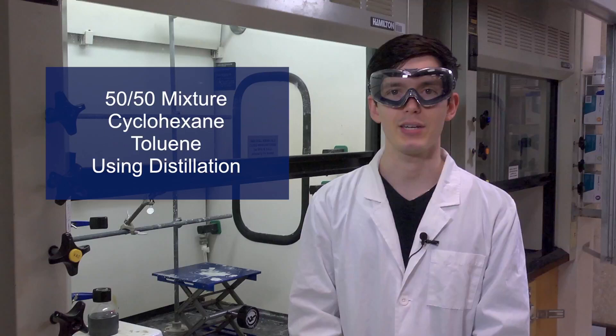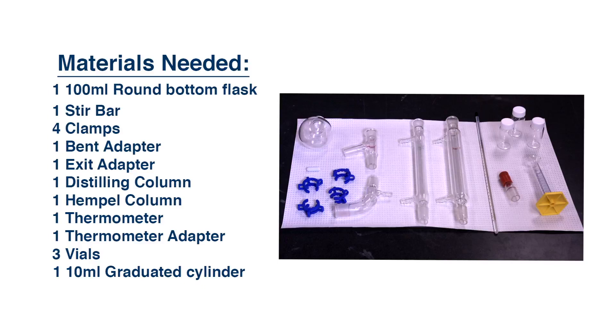We'll begin by gathering the materials. You will need a 100 milliliter round bottom flask, a stir bar, four Keck clamps, one bent adapter, one exit adapter, one distilling column, one hempel column, a thermometer, a thermometer adapter, three vials, and one 10 milliliter graduated cylinder.